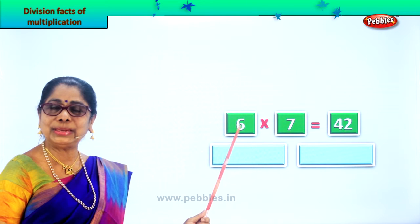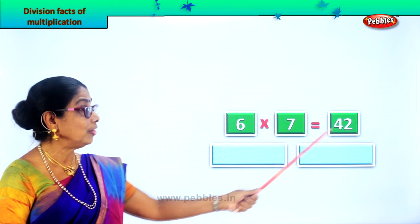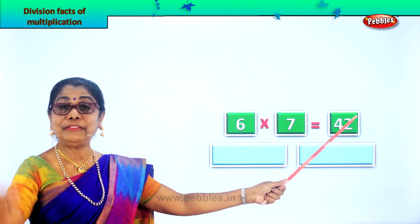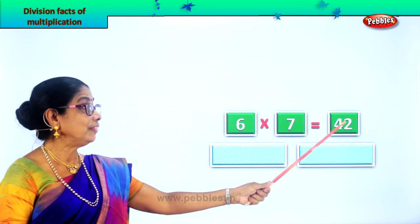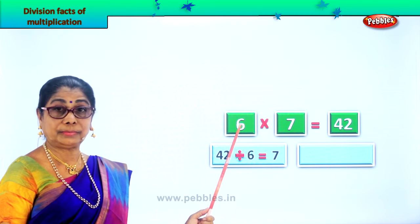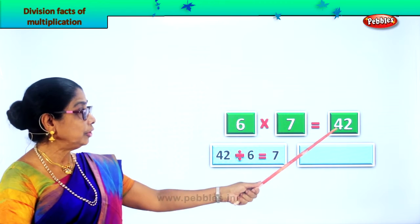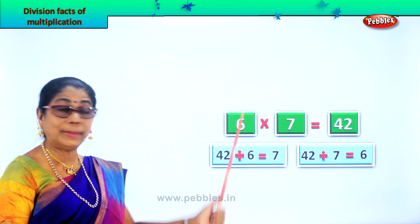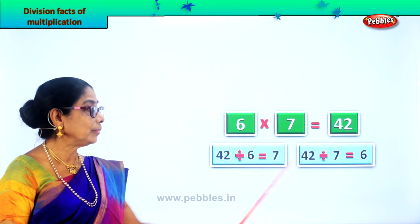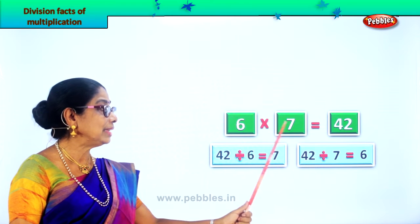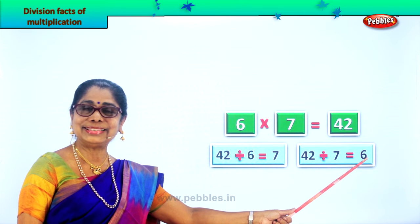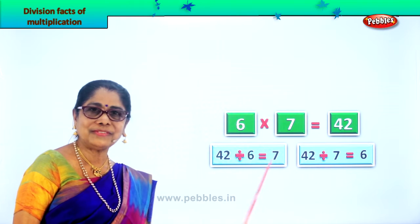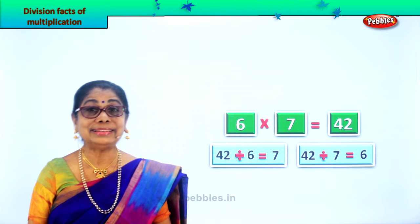Let's go to another sum and enjoy understanding that one multiplication fact gives you two division facts. Look here. Six sevens are forty-two. Now we are going to get two division facts. If you divide forty-two by six, it will give you the answer seven. And if you divide forty-two by seven, it will give you the answer six. One multiplication fact, we can get two division facts.